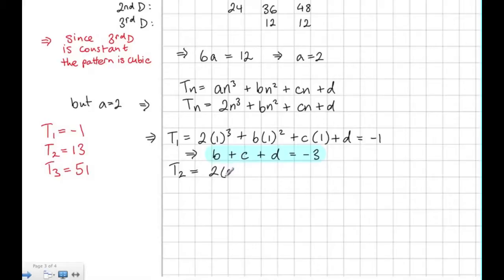When we stick in 2 for n, the value of the term becomes 13. This gives us that 4b + 2c + d is equal to 13 - 16, which is -3.